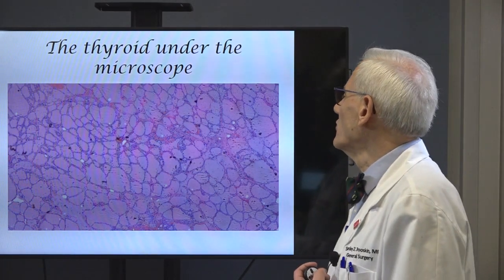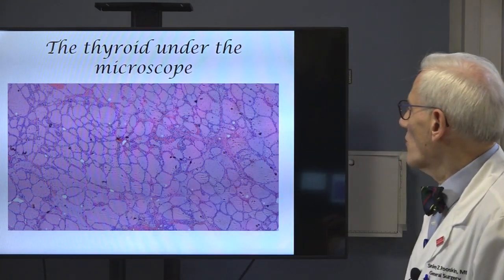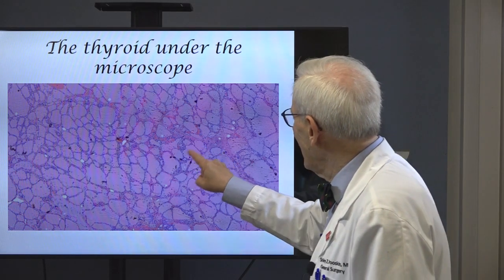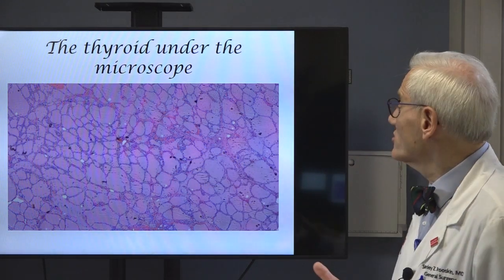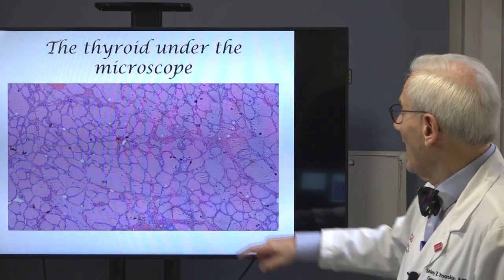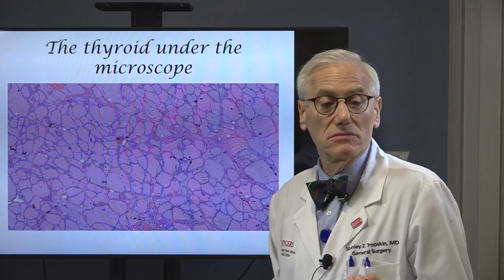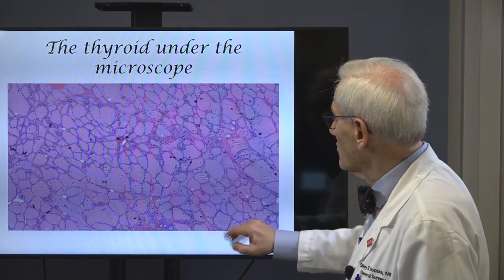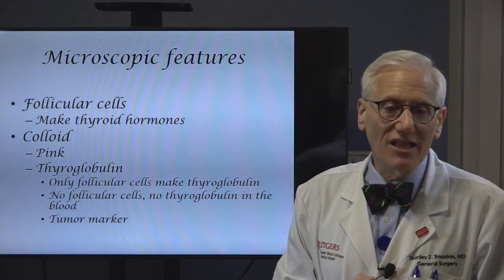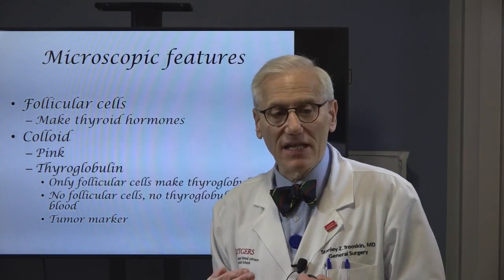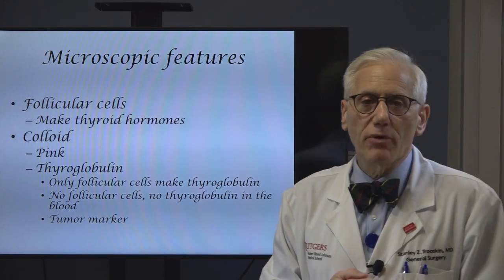This is what the thyroid looks like under the microscope. You can see these circles — whenever pathologists see a circle with cells on the outside, these are called follicular cells. Those are the normal cells that make thyroid hormone. In the middle is this pink stuff. Whenever pathologists see pink like that, they call it colloid. So you can see colloid and you see cells — this is normal thyroid tissue. The follicular cells make thyroid hormones. The colloid, the stuff in the middle, is pink because it takes up a dye. There's a specific protein in it called thyroglobulin.